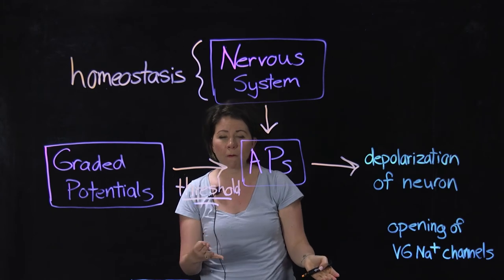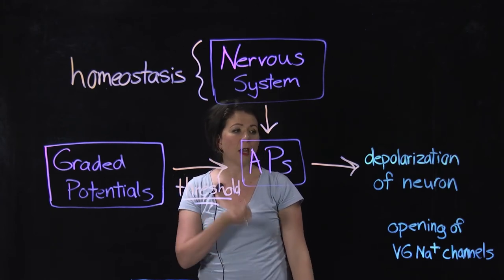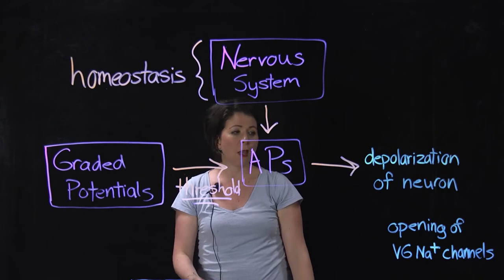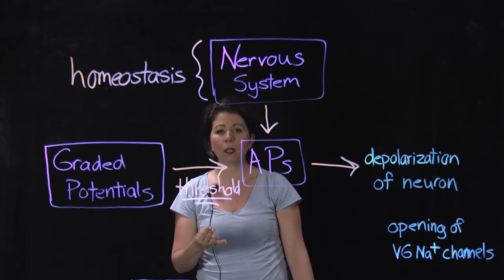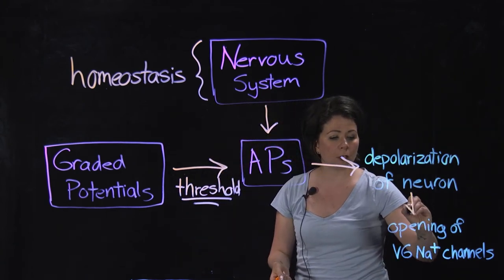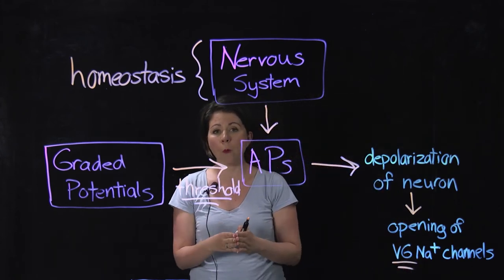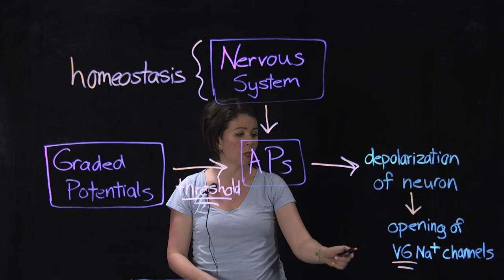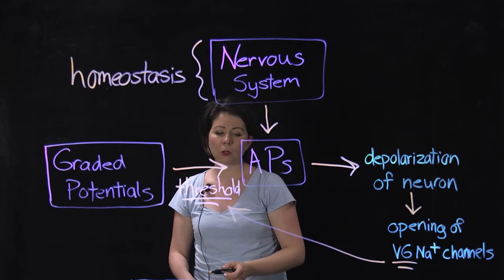Now those action potentials are caused by the depolarization of the neuron. We talked about the different phases: depolarization, repolarization, hyperpolarization. And that depolarization of the neuron, when we get down to it, is ultimately caused by the opening of these voltage-gated sodium channels. Voltage-gated because they respond to and open in response to a change in voltage. And what is that change in voltage? That threshold.